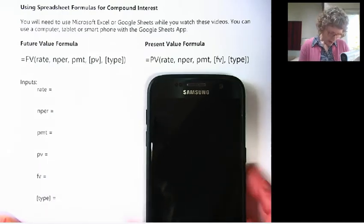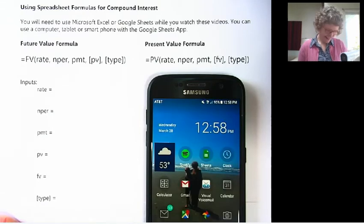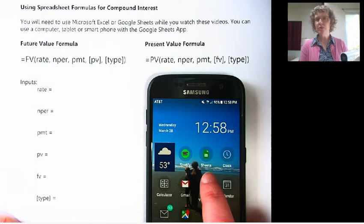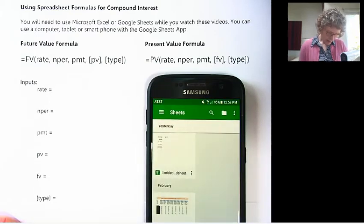So I have Google Sheets on my home screen here, so it's real fast for me to find it. You can also use the Google Drive app, but then you have to go to Sheets from the Drive. So Sheets gets there faster. So I click on that.